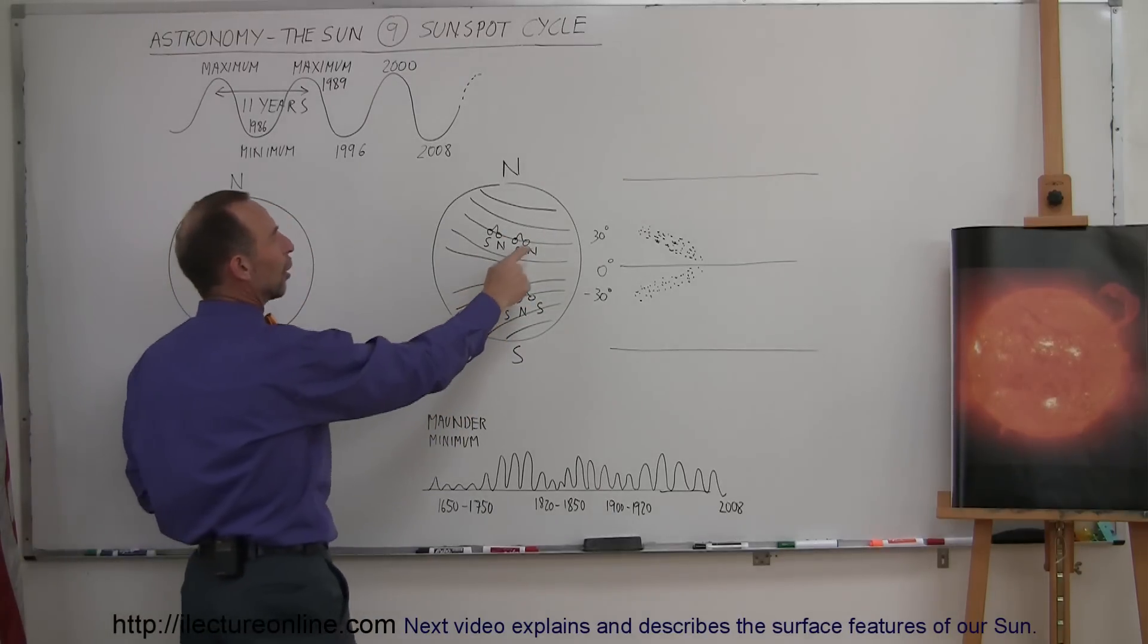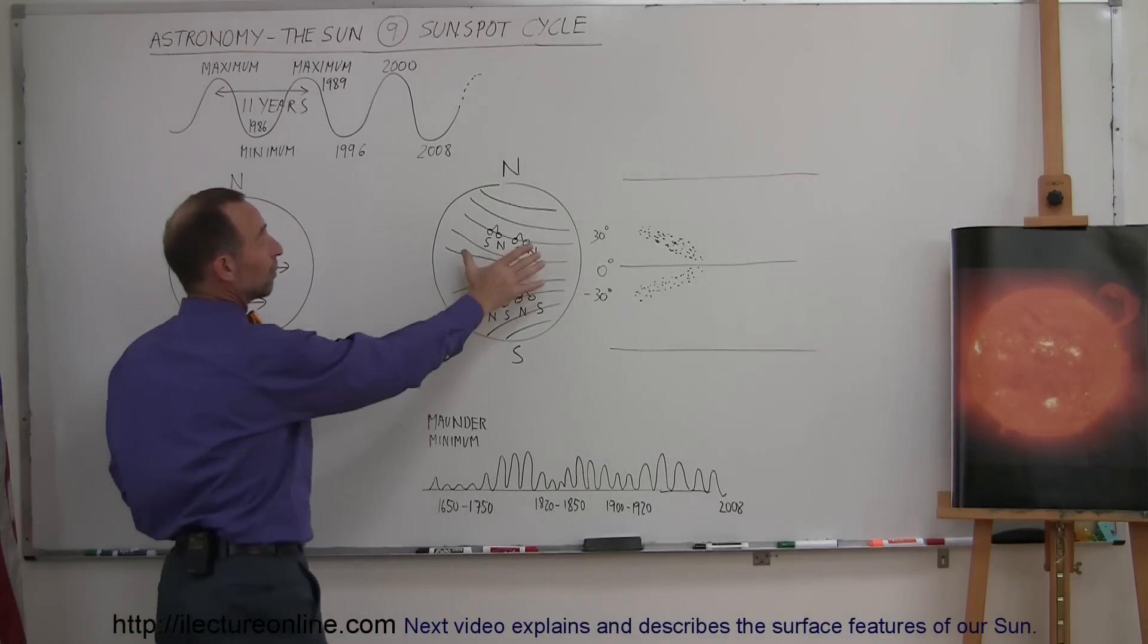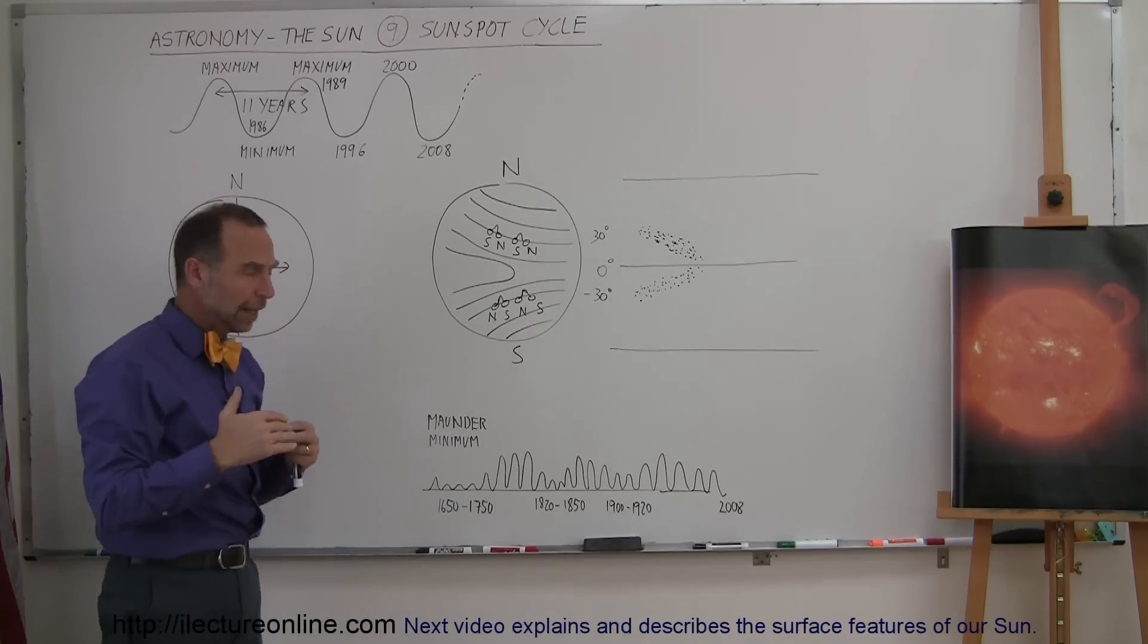And so you'll have a north pole at one sunspot and a south pole at the other sunspot. And notice that the north hemisphere, the order will be different from the south hemisphere.